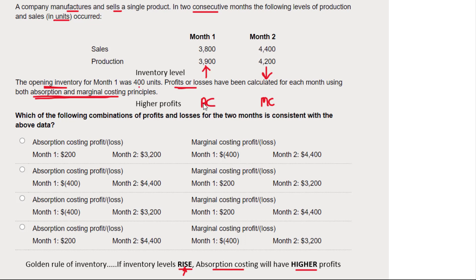Now I need to go through each of the four options and see which fits the pattern: month one — absorption costing has the higher profit; month two — marginal costing has the higher profit. Option one: in month one, absorption costing had a profit of 200 and marginal costing made a loss, so absorption costing is better. That fits. In month two, absorption costing made 3,200 and marginal costing did better — higher profit under marginal costing. That fits as well, so option one looks like a winner.